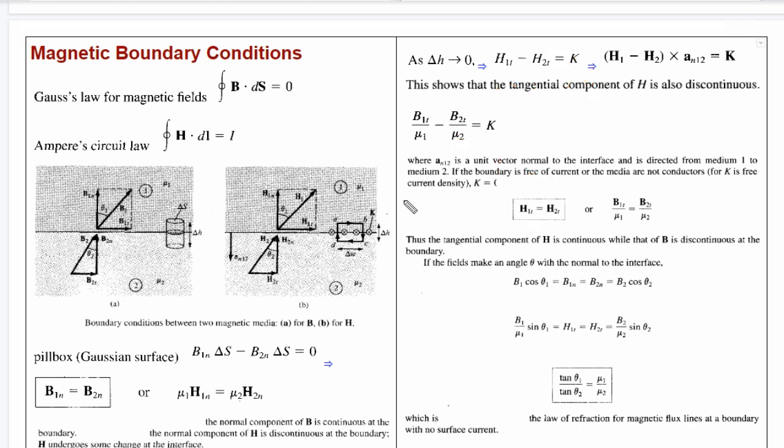To derive the magnetic boundary conditions, we use the same approach as electrostatic surfaces. We can use a Gaussian surface or an Amperian loop. We can use a pillbox shape, like a cylindrical box. For a closed surface in magnetostatics, the closed surface integral of B dot dS is equal to zero.